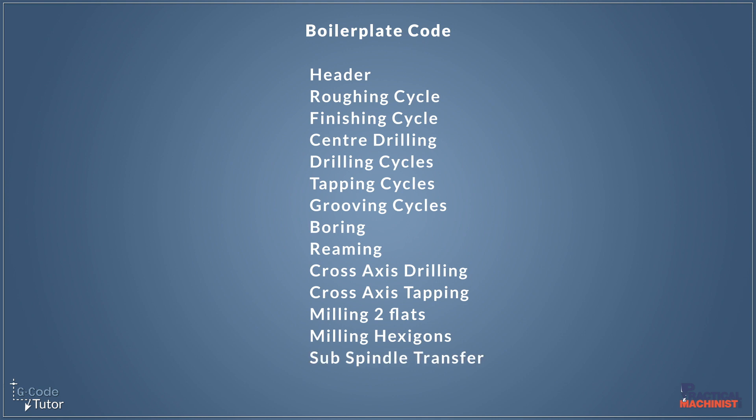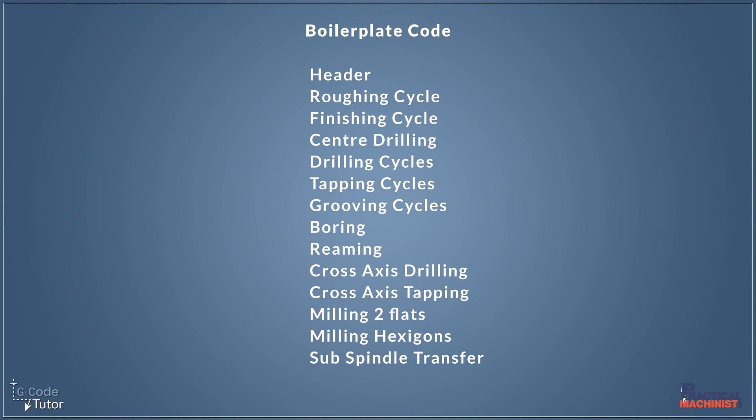When it comes to sub spindle transfer — taking the part from the main spindle and placing it into the sub spindle with a passing-off operation — this is generally always the same. We just need to add the rapid distance to where the sub spindle comes over to make sure it doesn't collide with the part in the main spindle. So again we can write the majority of our sub spindle transfer and then just copy and paste it into our main program. If we're not using a sub spindle transfer, we would just need a passing-off sequence where we edit the diameter to avoid colliding with the part and also the Z-axis position to give us the length of our part.